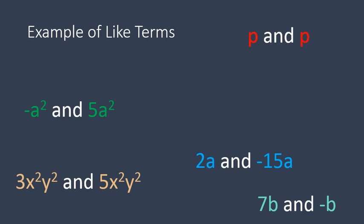3x squared y squared and 5x squared y squared. Notice the x squared y squared is exactly the same. Those are like terms. 3x and 2x, 5ab and ab by itself. So here are examples of like terms. Notice the variable is exactly the same in every single term. That's what makes it a like term.